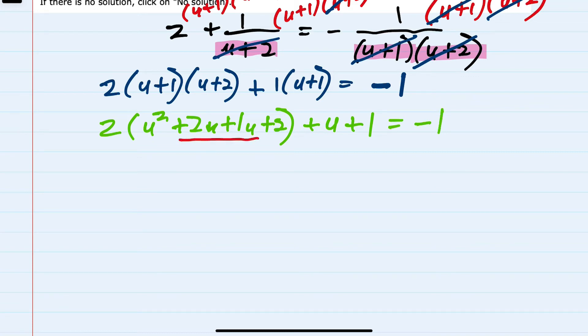Then I can combine these like terms on the left, bringing down everything else. The 2 is still on the outside, u squared. 2u plus 1u is a plus 3u. And I'll bring everything else down.